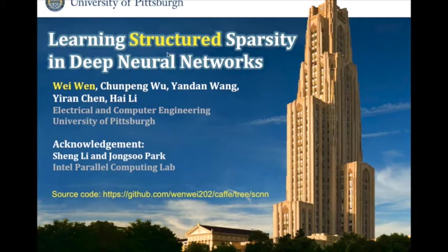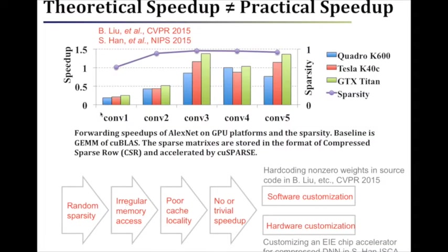Unlike previous works, our sparsity is structured. Our source code is available online. Sparse DNN is a good way to reduce computation. Liu and Han prune the connections and get good sparsity in DNNs. However, the practical speedup is very limited. Taking AlexNet as an example, even with more than 19% sparsity by those methods, the speed slows down in most cases when we use the CuSparse library on GPU. This is because random sparsity results in irregular memory access patterns and poor cache locality.